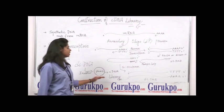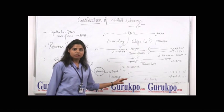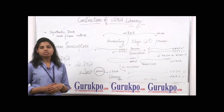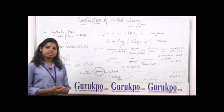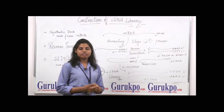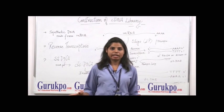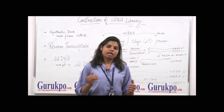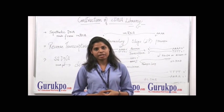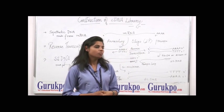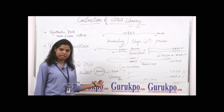From this plasmid, we have taken cDNA clones. After the cDNA clones, we have screened out which is working and which is not working. All these collections of cDNA clones construct into a cDNA library. So this is all with the construction of a cDNA library.